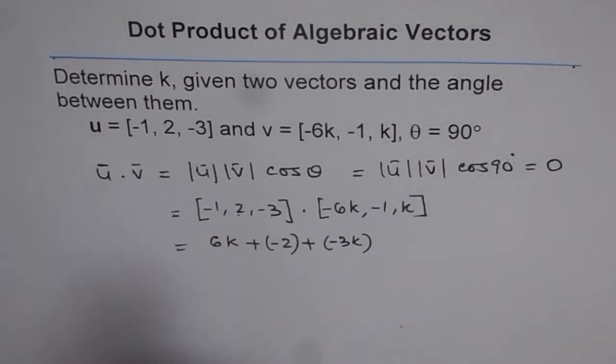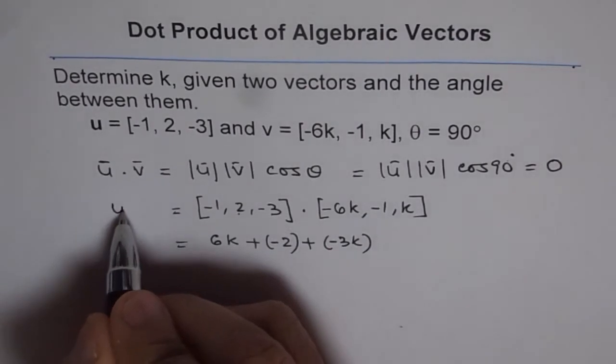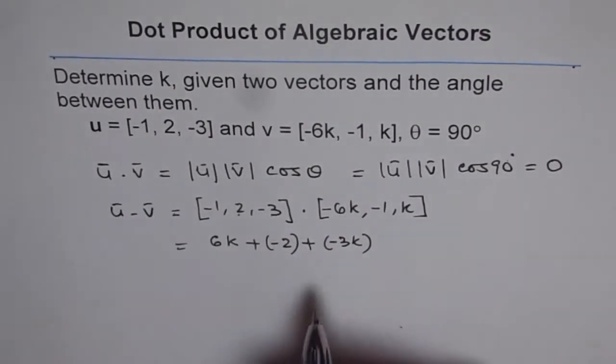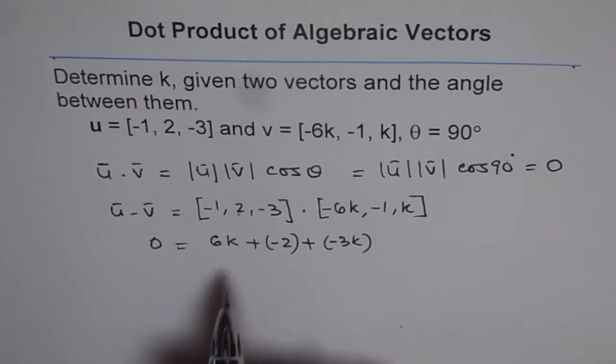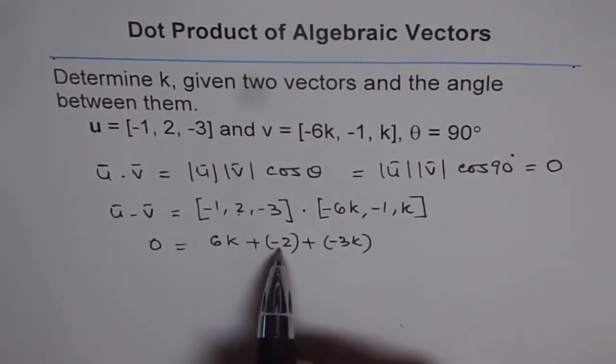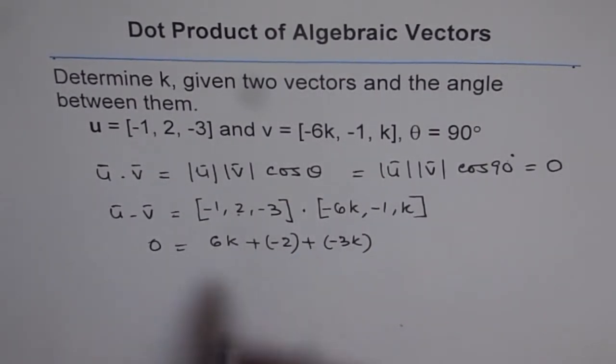Both dot products should be the same. Therefore, 0 = 6k - 2 - 3k.